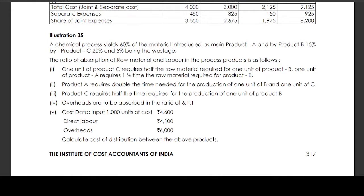Cost data: input 1000 units at cost 4600, direct labor 4100, overheads 6000. Calculate the cost of distribution between the above products.